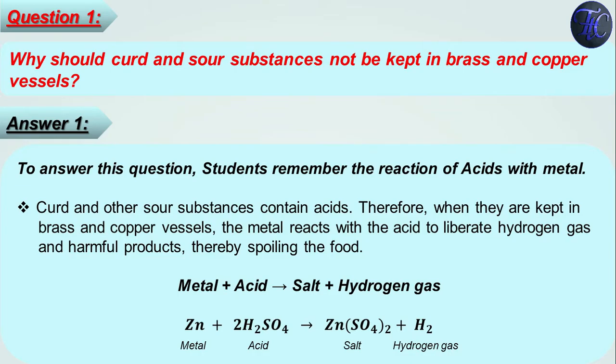Let's see an example. If zinc which is metal reacts with H₂SO₄, it will produce zinc sulfate which is salt and hydrogen gas which is H₂.